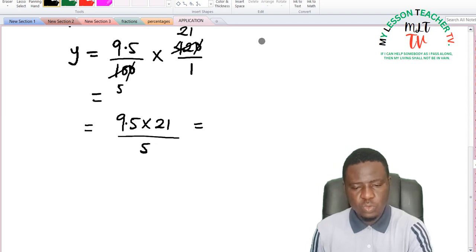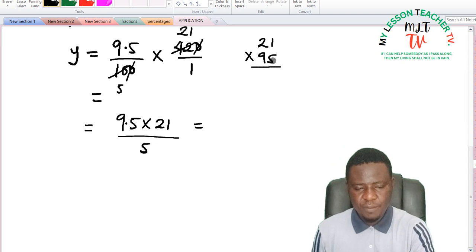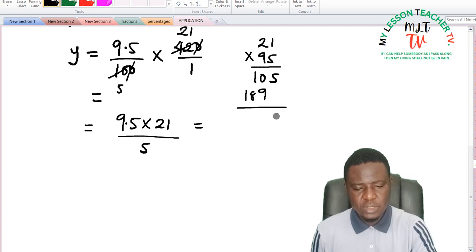This is equal to 21 times 9.5. Let me remove the decimal point, I'm going to put it back. 5 times 1 is 5, times 2 is 10. 9 times 1 is 9, 9 times 2 is 18. So that this is equal to 5, 9, 9, 1.